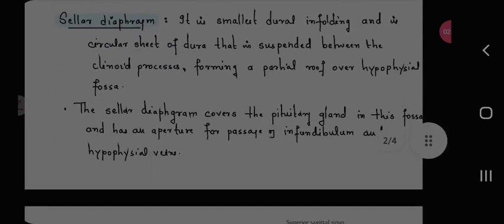Diaphragma sellae: it is smallest dural infolding and its circular sheet of dura is suspended between the clinoid processes, forming a partial roof over hypophysial fossa. The diaphragma sellae covers the pituitary gland in this fossa and has an aperture for passage of infundibulum and hypophysial veins.